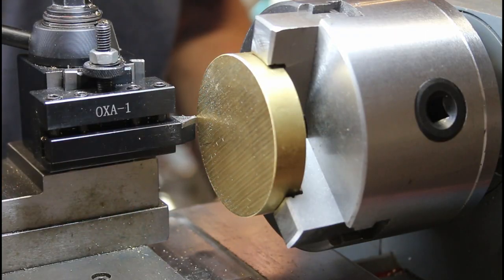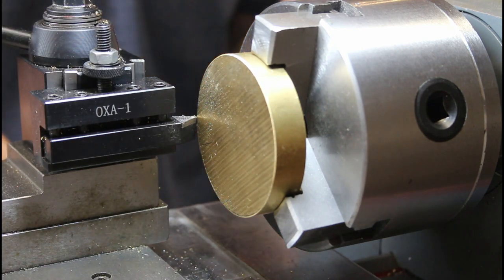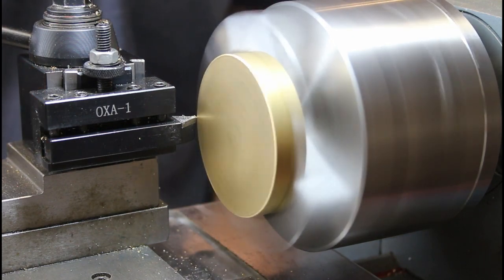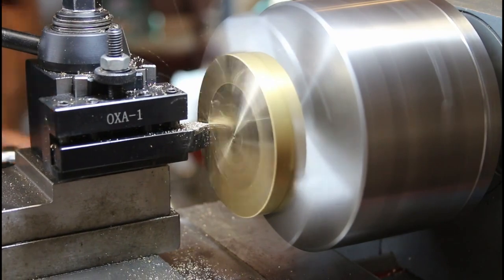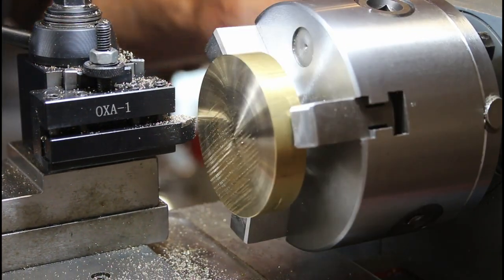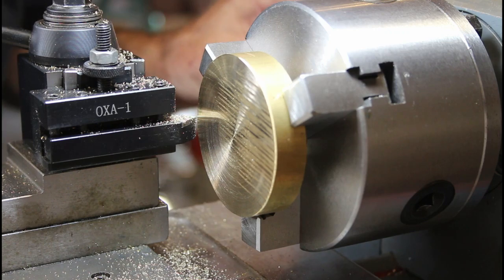So this is the chunk of brass that I'm going to use to make the large flywheel for the engine and I'm just going to face off this end and start getting into it here. About halfway. Got about another thou or two to take off.